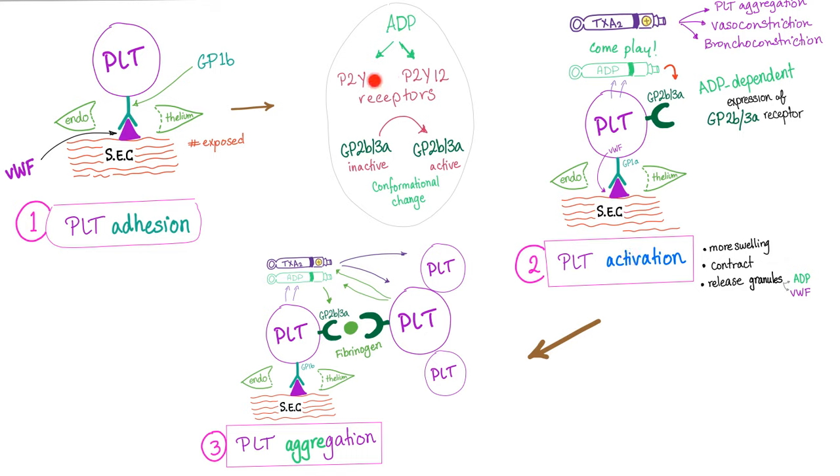Don't forget: ADP, P2Y12, activate the GP2B3A from inactive to active via conformational change. GP2B3A will help platelets aggregate together because each platelet has one. So what is the purpose and mission of P2Y12? It facilitates the steps for platelet aggregation.